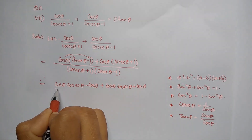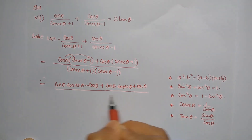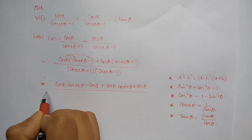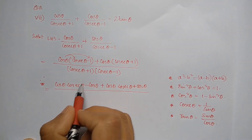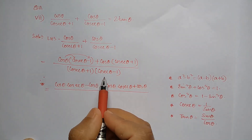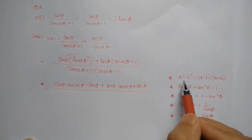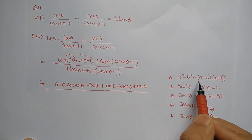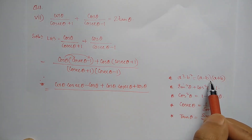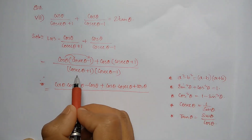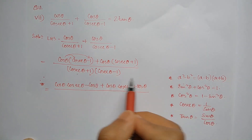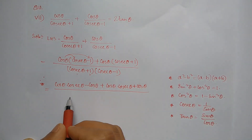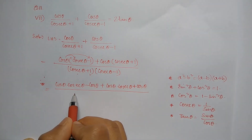Then, if we say A square minus B square equals A minus B times A plus B. If A is there, then B is there — A minus B times A plus B.